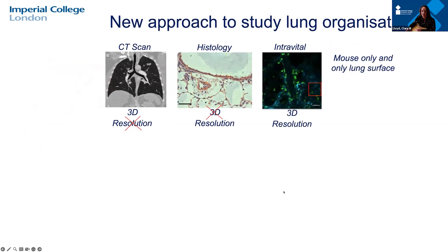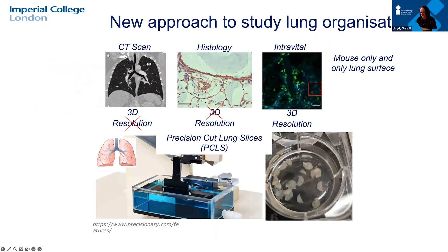We've been looking at different ways to image cellular interactions. CT scans don't give deep cellular resolution, and standard histology lacks 3D resolution, so we use precision cut lung slices — thicker lung slices that allow us to image in a 3D orientation and look at the interactions of a number of different cells together.